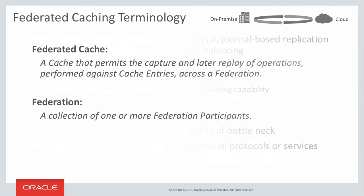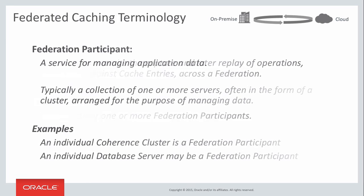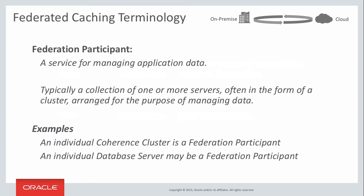So let's discuss how we configure and talk about federated caching, and to do this we need a new set of terminology. A federated cache is a cache that permits capture and replay of operations performed against the cache across a federation. In reality, a federated cache is a distributed cache that distributes partitions of information across a single cluster, captures that information and journals it so it can later be replayed across a federation. A federation is a collection of one or more participants — or federated participants. A federated participant is essentially a service for managing data, typically a collection of one or more servers, often in the form of a cluster. For us, a federated participant is almost always a Coherence cluster, though federated caching is architected to allow federation not just between Coherence clusters but to other devices and databases as well.